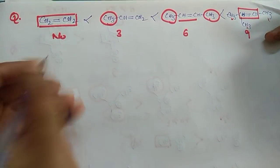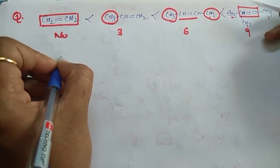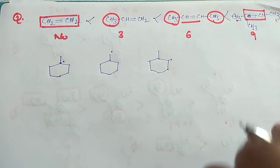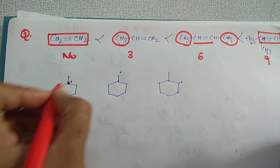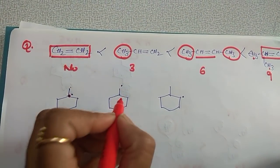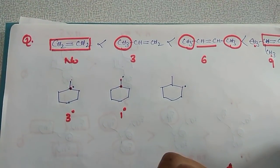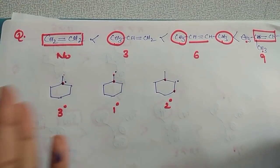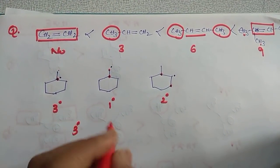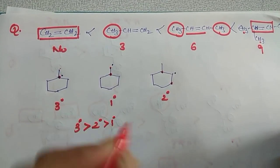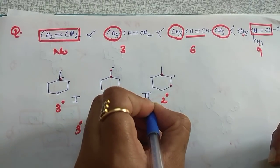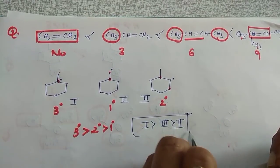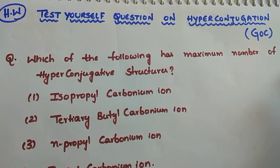For free radicals, the approach is the same as for carbocations. Among three structures: one free radical is connected to 3 carbons (tertiary), one to 1 carbon (primary), and one to 2 carbons (secondary). Count the alpha hydrogens — tertiary free radical is more stable than secondary, which is more stable than primary. So stability order: structure 1 > structure 3 > structure 2.